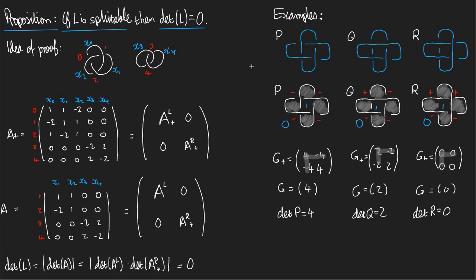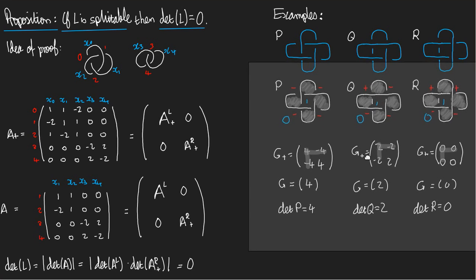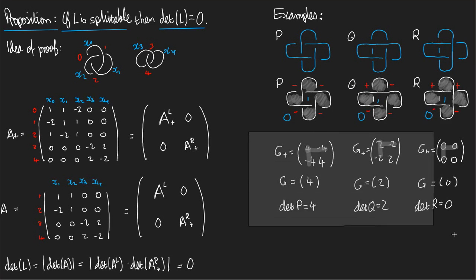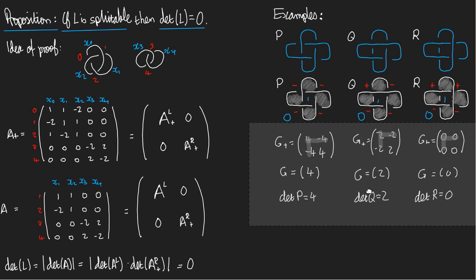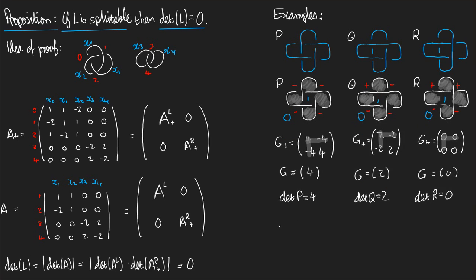Now we should ask ourselves what can we conclude using the proposition? Doing a little bit of housekeeping here, just making space for the rest of the answer. So P and Q are not splittable since the determinants are non-zero. The determinants of P and Q are non-zero.